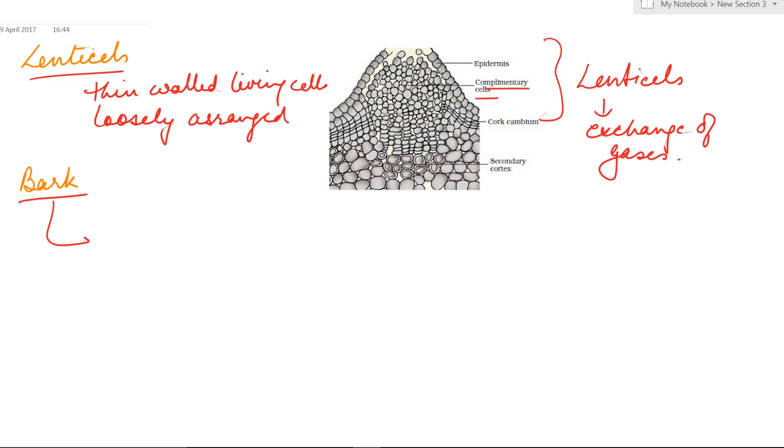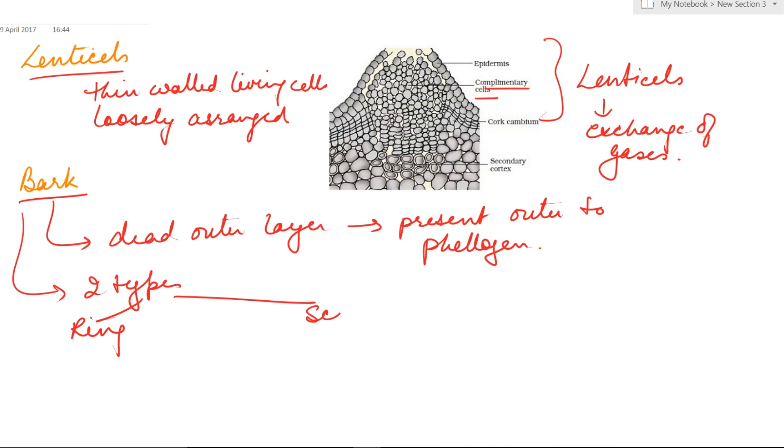The dead outer layer present outer to phellogen is referred as bark. Bark are of two types: ring bark and scaly bark. The dead layer comes out in the form of ring, this is seen in Betula, while scaly bark is seen in guava and eucalyptus.